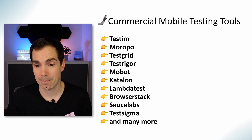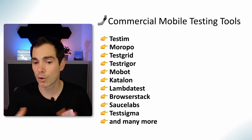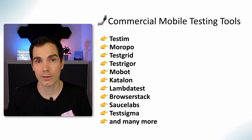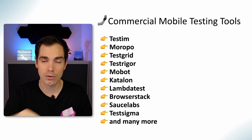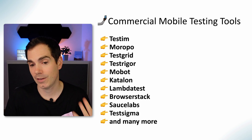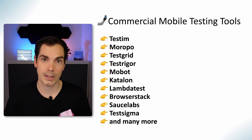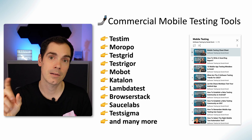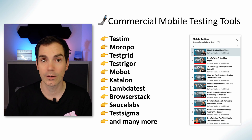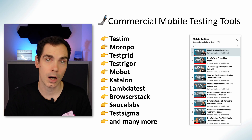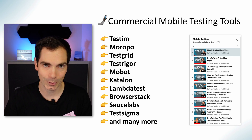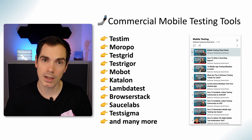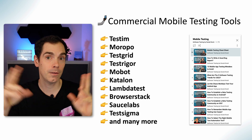Now we come to some commercial tools. Tools listed include Tester, Moropo, TestScrew, TestRigor, Mobot, Katalon, LambdaTest, BrowserStack, SauceLabs, TestSigma, and many more — you may have already seen these on my channel. I also have a playlist linked below specifically targeting mobile testing with more than 70 videos covering different tools and how to work with mobile testing. These are licensed or paid tools that offer great features around the core of mobile automation.